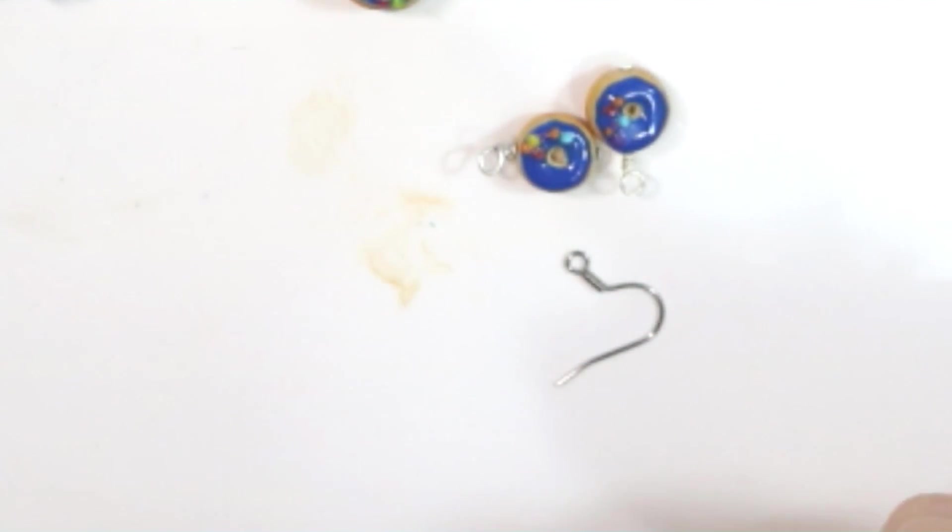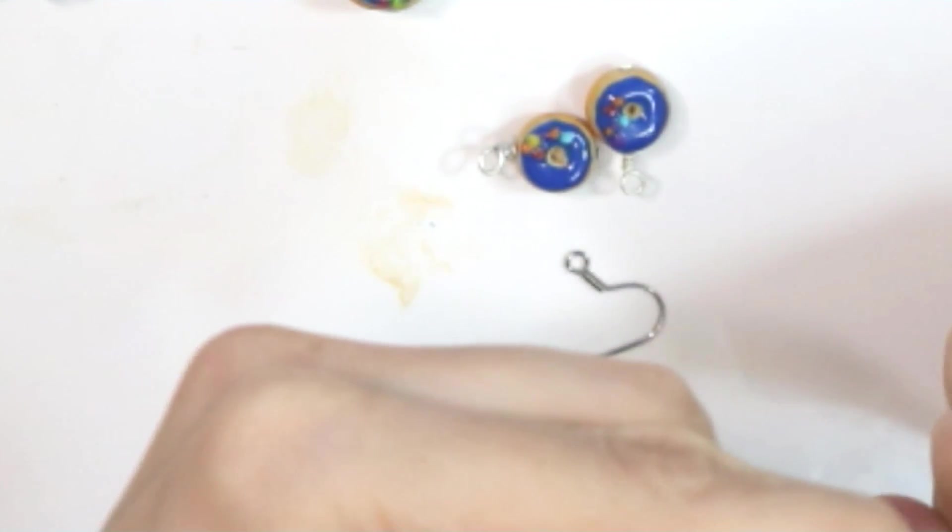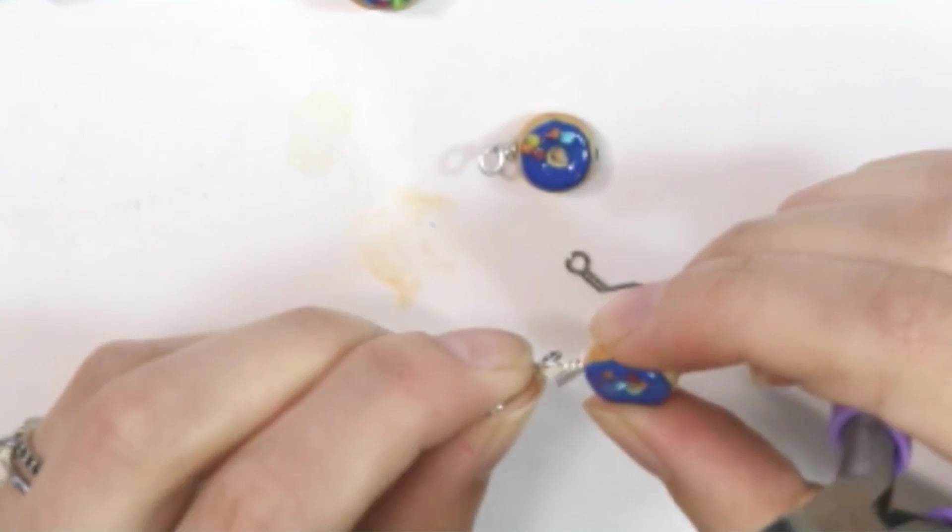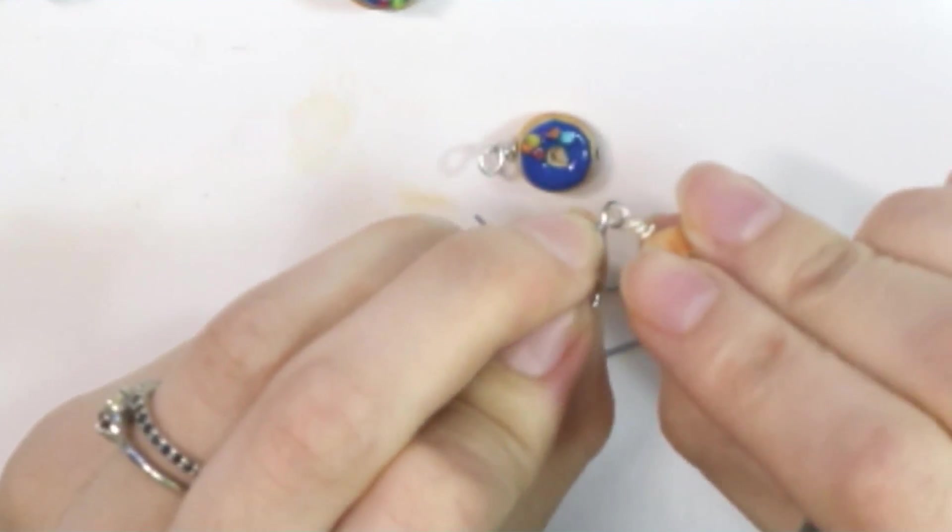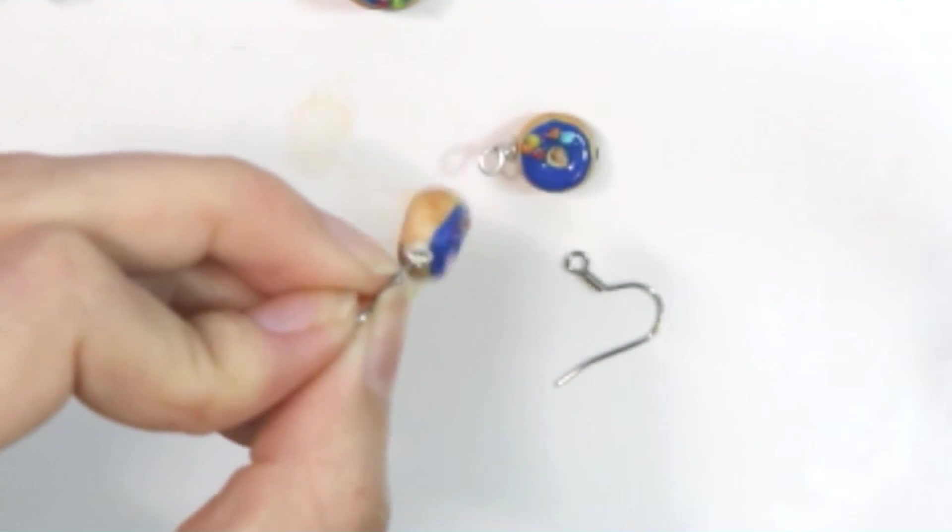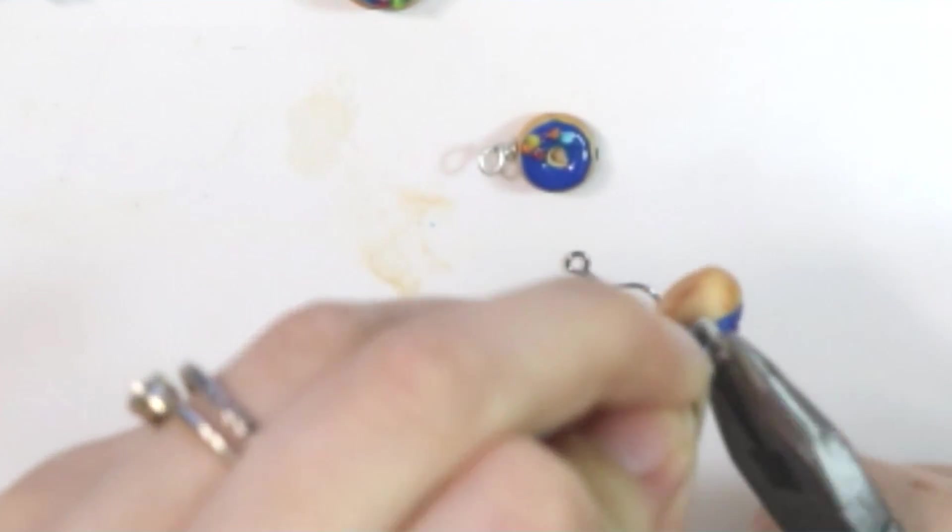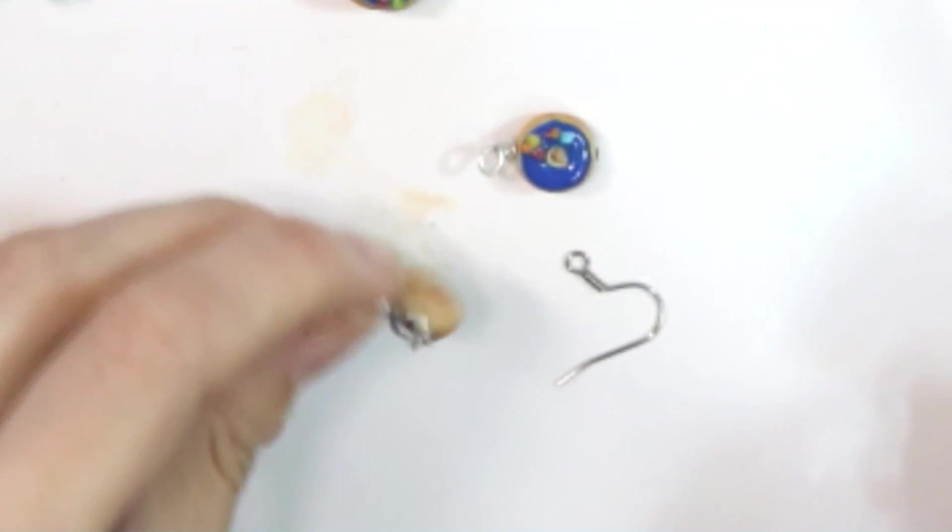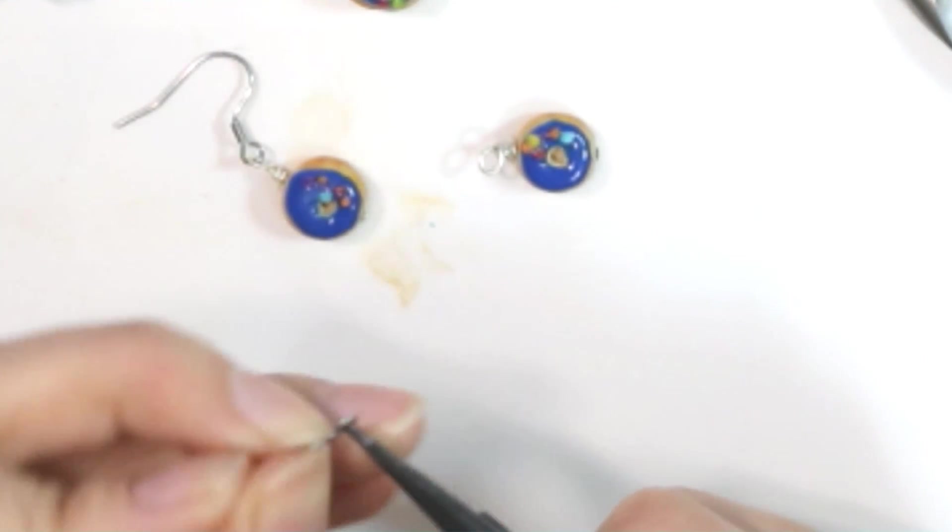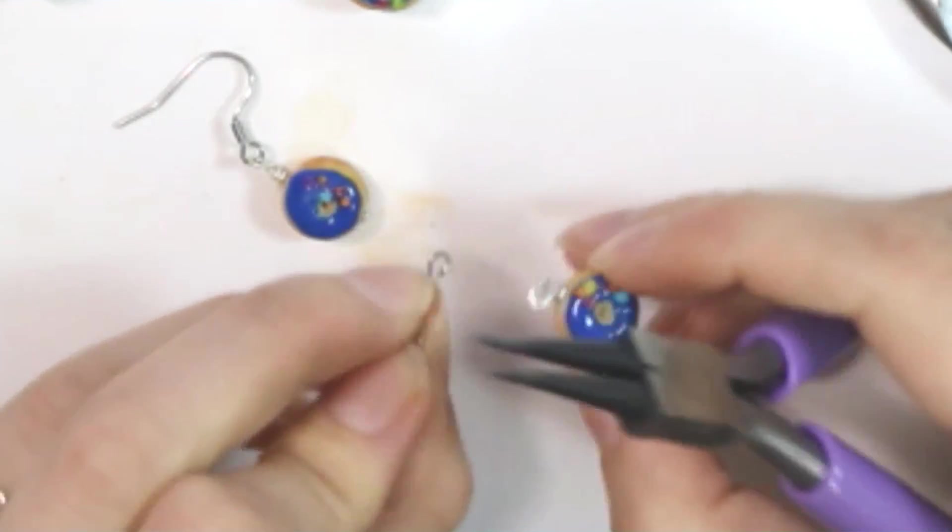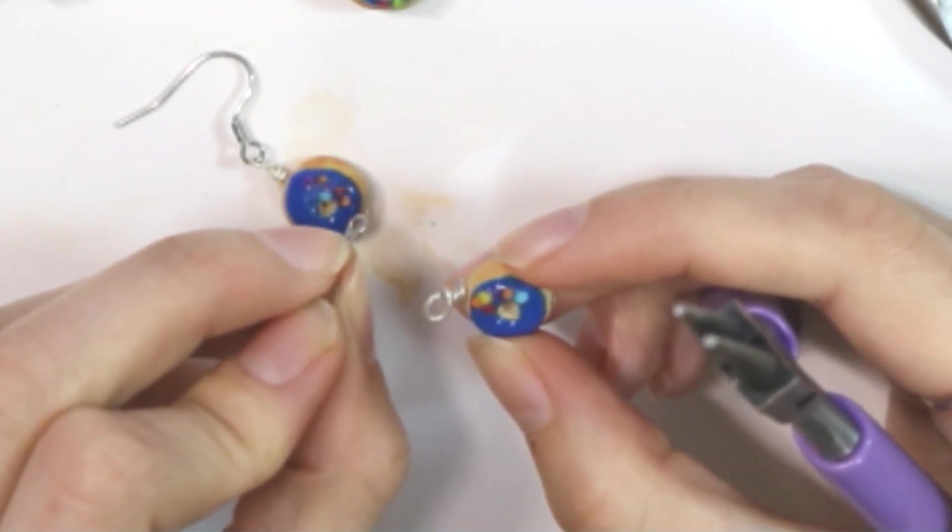I like to use my needle head pliers so that we don't ruin the loop that's already been created. You're just going to add that on. Then I like to use my flatbed pliers to close it up. Now we're going to do that again.